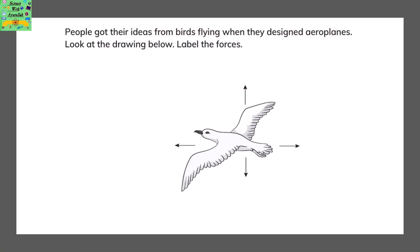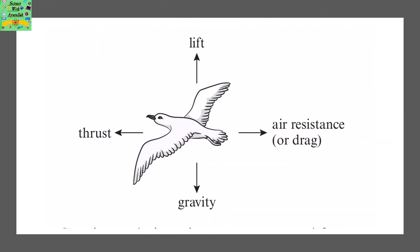People got their ideas from birds flying when they designed the aeroplanes. Look at the drawing below. Label the forces. The forces here are also the same as the aeroplane. The force lift is being pushed upwards, thrust moves the bird forward, air resistance or drag moves it backwards and gravity moves it downwards.